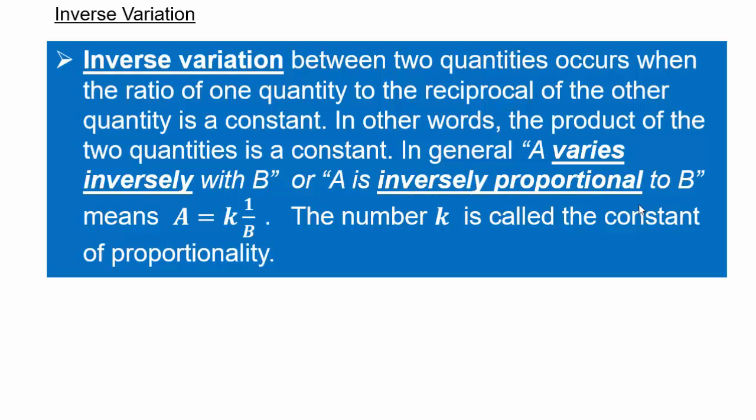Inverse variation is the next one. Can you imagine what that is? Remember, direct means one goes up, the other one goes up. Inverse variation would must mean the opposite. So one goes up, the other one goes down. So instead of the ratio being constant, you will have their product being constant. So inverse variation, a varies inversely as b if a is a constant multiple of 1 over b. Remember, direct variation, it was just k times b. But inverse variation would be k times 1 over b. And again, k is called the constant of proportionality.